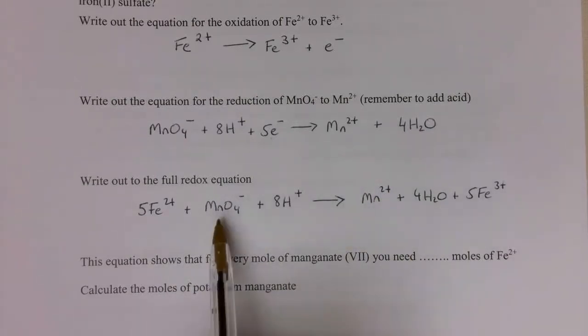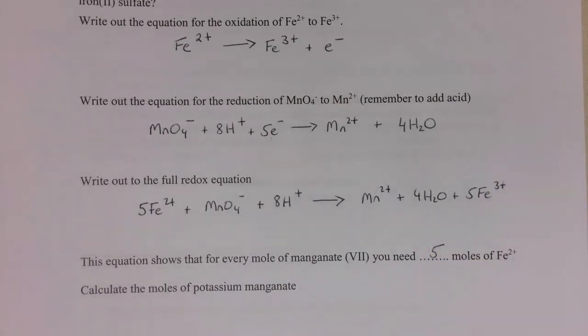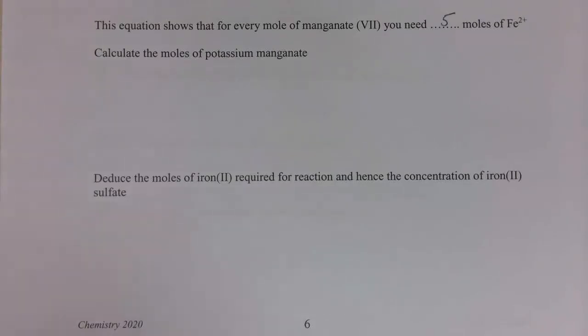And the equation shows us, just as it does for an acid-base titration, the molar ratios. So for every one mole of manganate, I have 5 moles of iron. So in the next section, we're just going to work out the moles of potassium manganate.